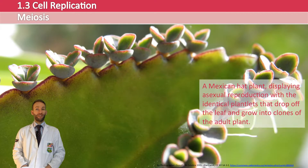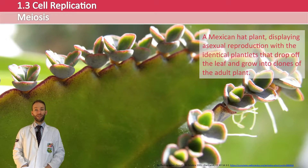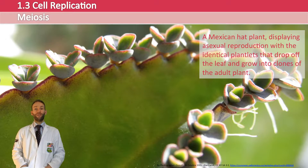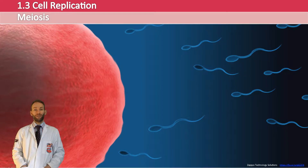Asexual reproduction is fast, but it does not create any variation at all. For a species to survive long term, you want the offspring to be varied so that not all of them are vulnerable if the environment changes. To do this you're going to need to do sexual reproduction.